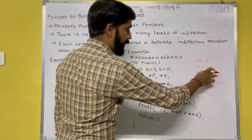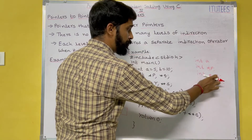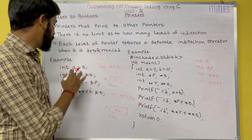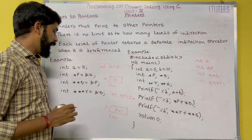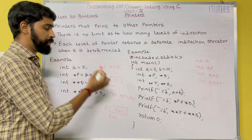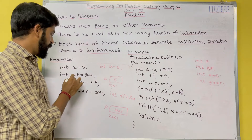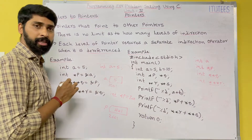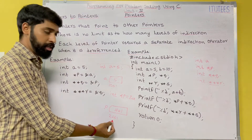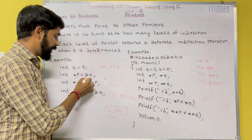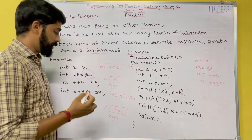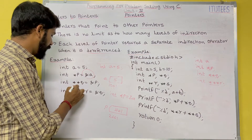So here: `a` equals to 5 has address 1000, `p` equals to `&a` so `p` is at address 2001 and stores the address of `a` which is 1000.